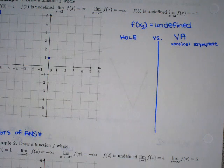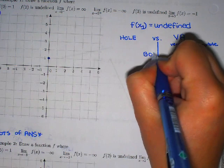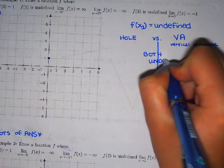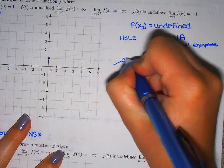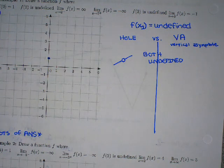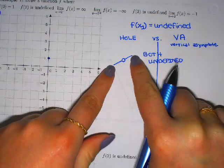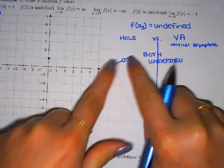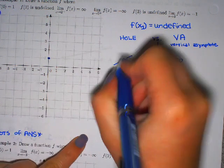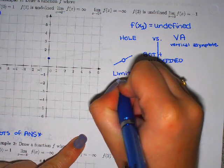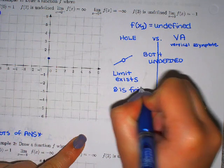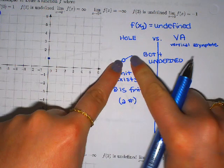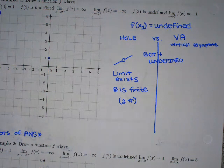Let's see what's similar between these two and what's different. Both are undefined when you plug in — but they have a difference in what their limit looks like. If I take the left-hand limit and the right-hand limit as I approach a hole, does that limit exist? Yes — we get to the same spot, so the limit exists. From the left and the right, they both go to y equals some finite number, like y = 6. So the limit exists and it's finite, just a regular number.